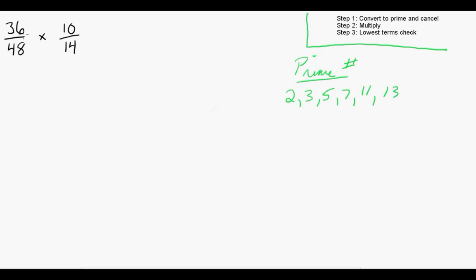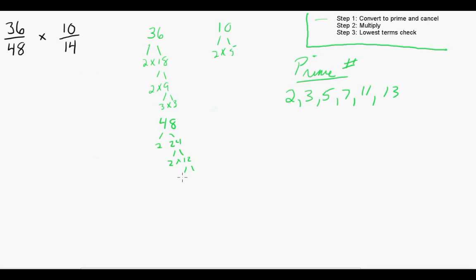Let's take a look at another example. We have 36 over 48 times 10 over 14. Step 1 is to convert to prime factors and then cancel. 36 converts to 2 times 18, which converts to 2 times 9, which converts to 3 times 3. 10 converts to 2 times 5. 48 converts to 2 times 24, then 2 times 12, then 2 times 6, then 2 times 3. And lastly, 14 converts to 2 times 7.